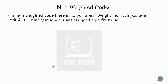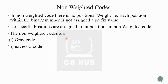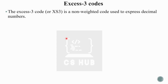Non-weighted codes are those in which each position within the binary number is not assigned a specific positional weight. No specific weights are assigned to the bit positions in a non-weighted code. Examples of non-weighted digital codes are gray codes and XS3 codes.